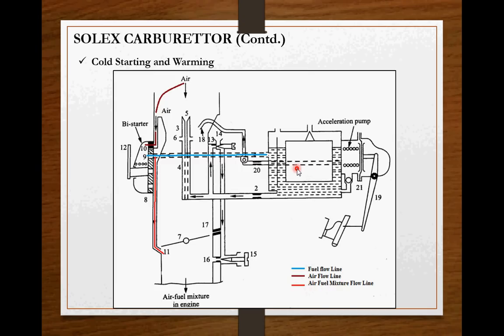So during cold start, float chamber supplies fuel to this channel to the bystarter at port number 9. This is a disc which is rotated by using a number 12 lever. During cold start, the driver has to pull this lever in order to rotate the disc and match the largest diameter hole of this disc with this incoming channel. This disc has number of holes of various diameters and by pulling this lever, we engage the largest diameter hole with this incoming fuel line.